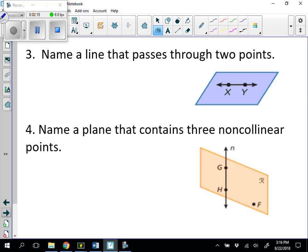Next one, name a line that passes through two points. When I look at my diagram, I see my one line there. So when we name that line, we use the two points and then we use the line symbol above it. So that's line XY, or line YX.